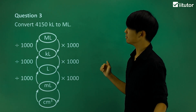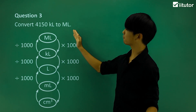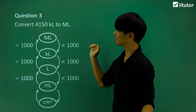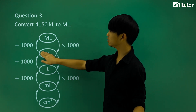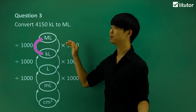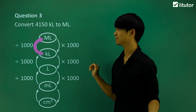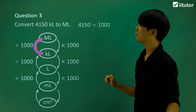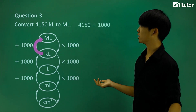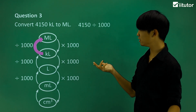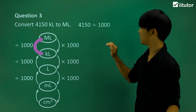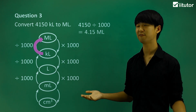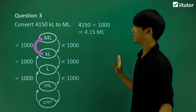Now looking at question three, we're going to convert from kiloliters to megaliters — so we're going up this time. Kiloliters to megaliters means we divide by 1,000. So 4,150 kiloliters divided by 1,000 gives us 4.15 megaliters.